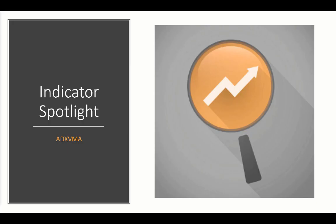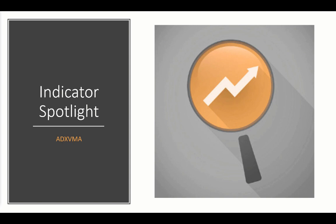And this time around, we're looking at the ADX VMA, which is an adaptive moving average that responds to price fluctuations. So it will follow price closely during trending markets and become less sensitive during sideways action.